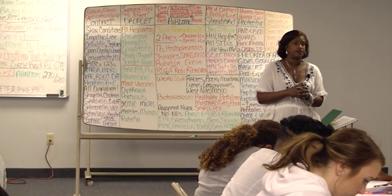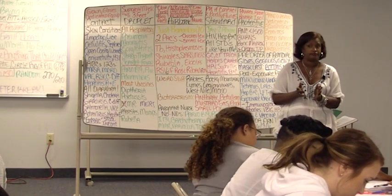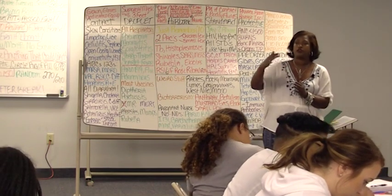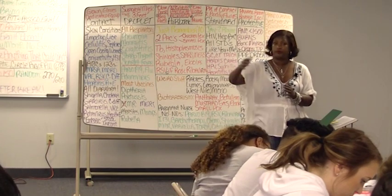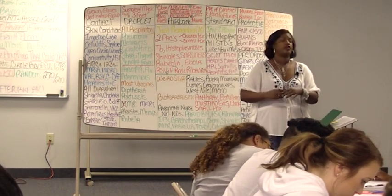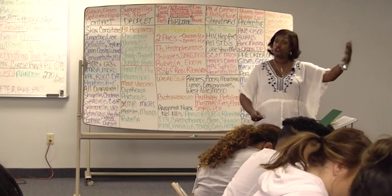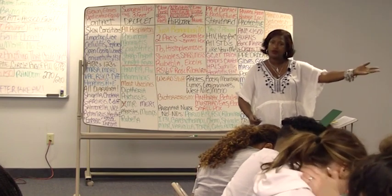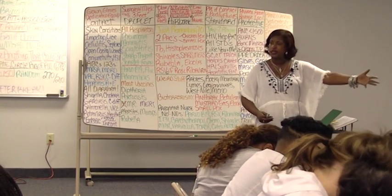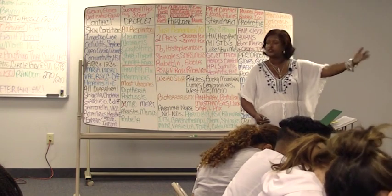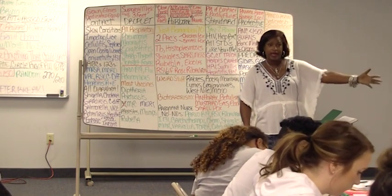Glomerulonephritis presents with tea-colored urine. Rheumatic fever presents with a high fever and migrating joint pain, and it can lead to endocarditis — the valve affected is the mitral valve. That's very serious.